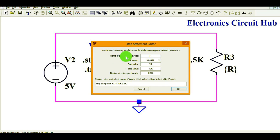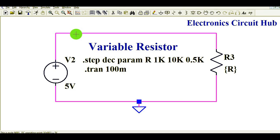Name of parameter to sweep is R, nature of sweep, decade, start value 1K, stop value 10K, and number of point per decade is 0.5. Now let me directly run the transient analysis.